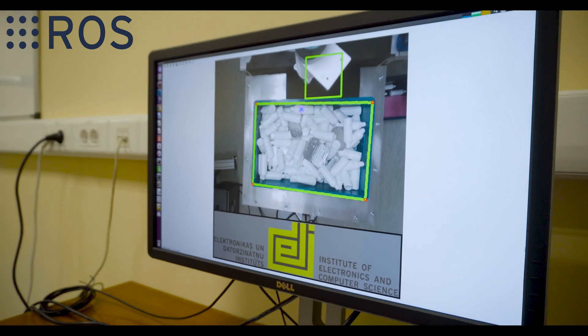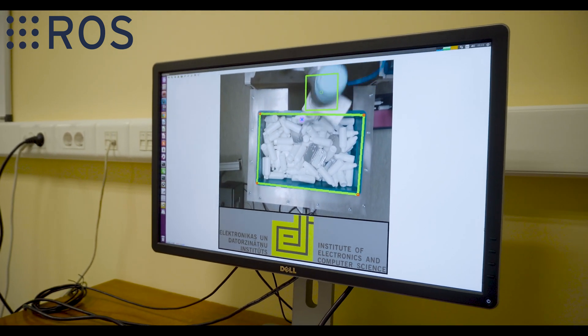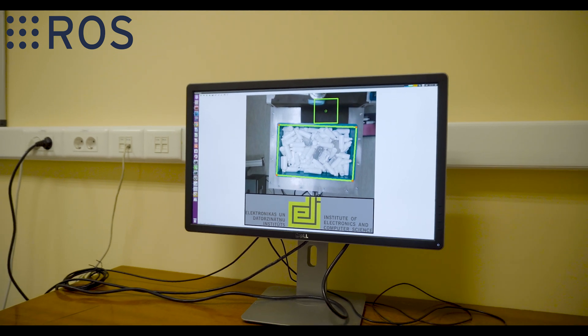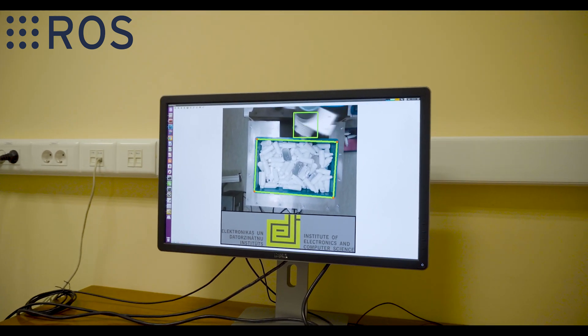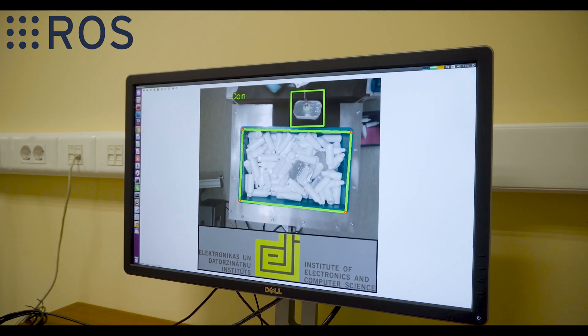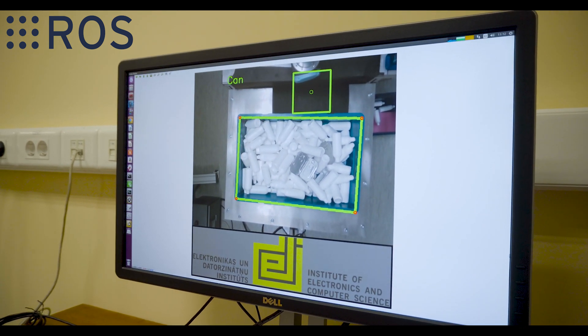For example, object classification module can be used in simpler tasks where just a type of object needs to be determined and potentially could be applied in object sorting process or assuring that the right type of object has been put in the particular machine.